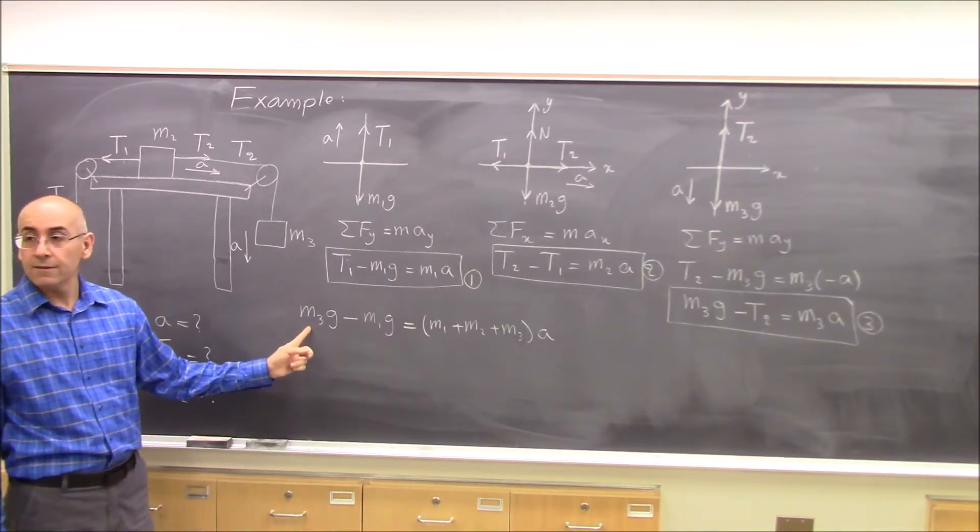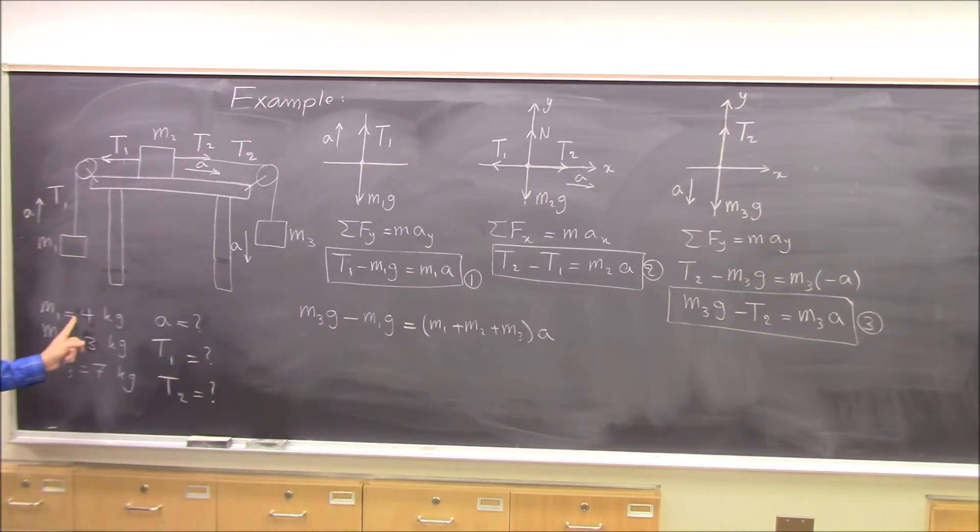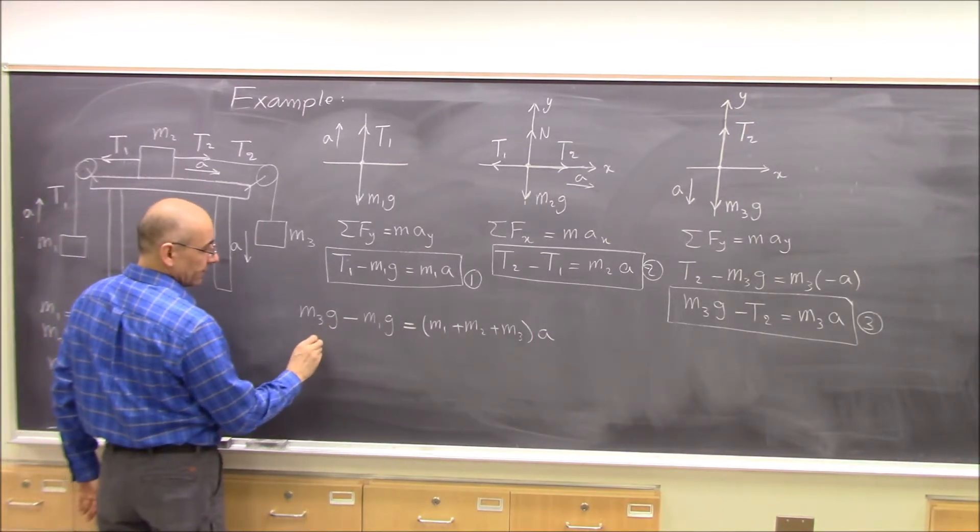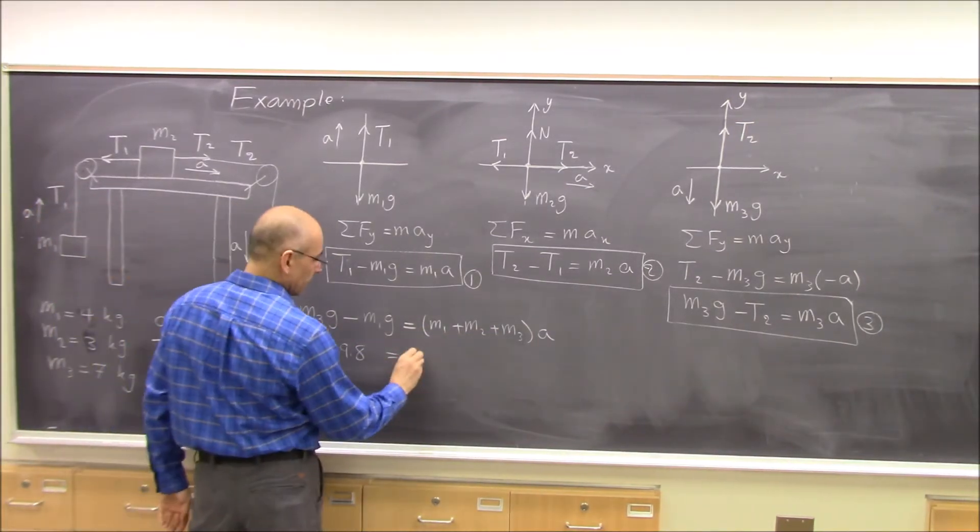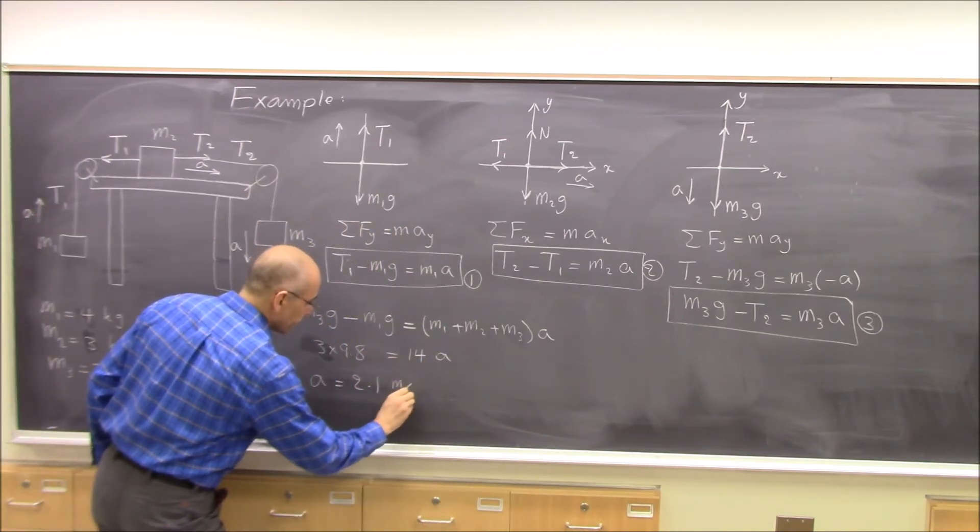M3 is 7 kg, m1 is 4 kg. So a will be 2.1 meters per second squared.